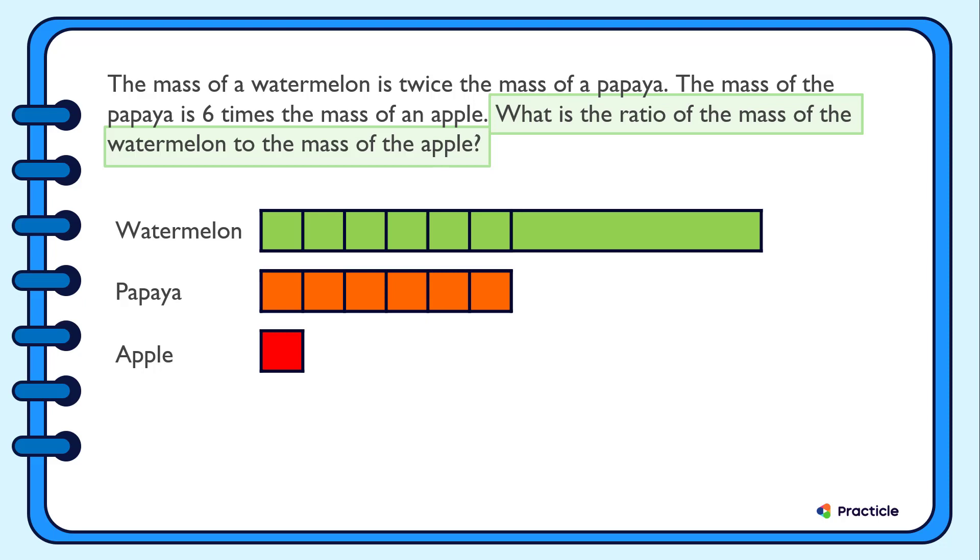When we divide each of these bigger parts into six smaller parts, we are going to end up with 6 plus 6, 12 smaller parts that represent the mass of the watermelon.